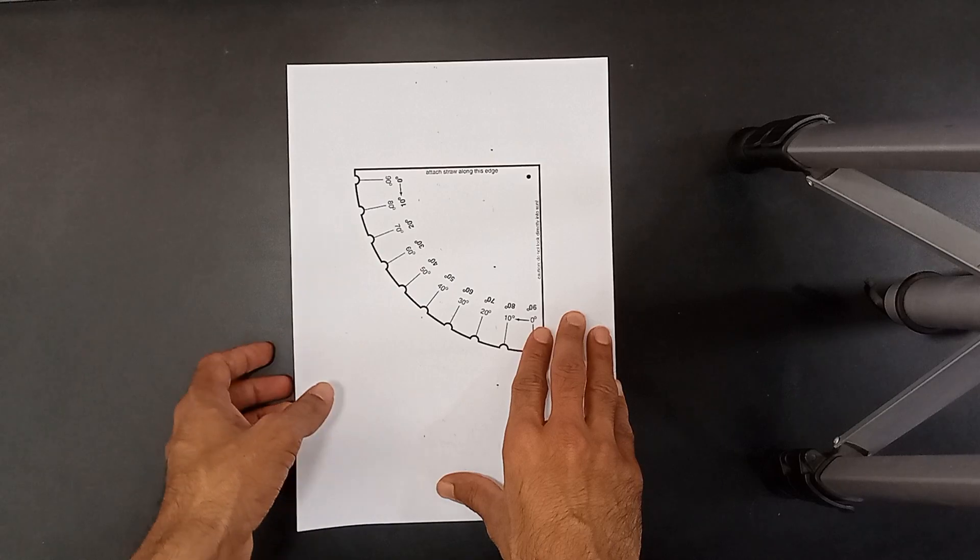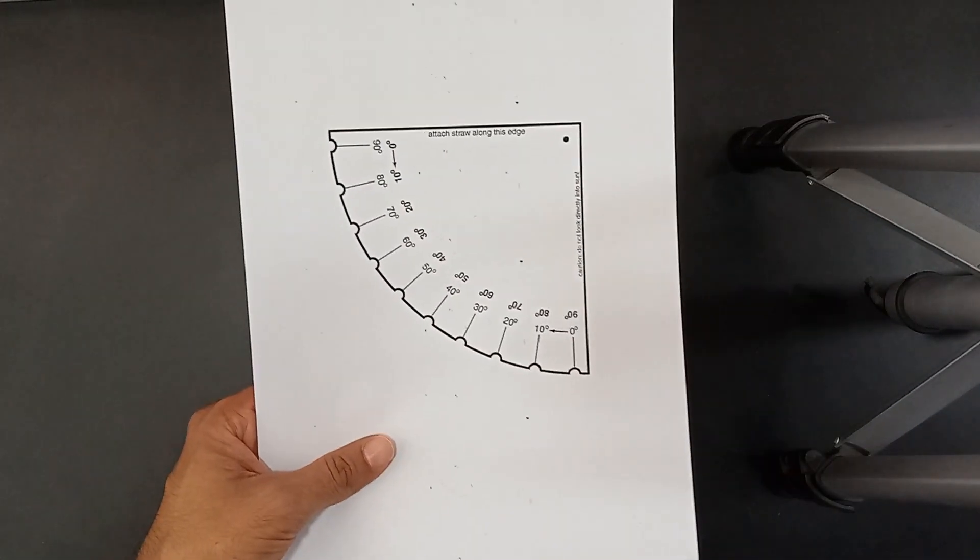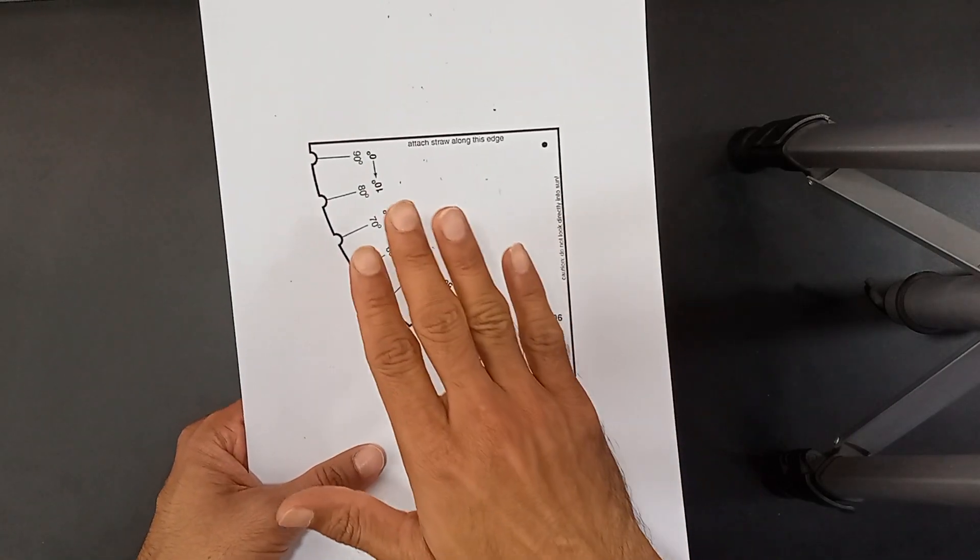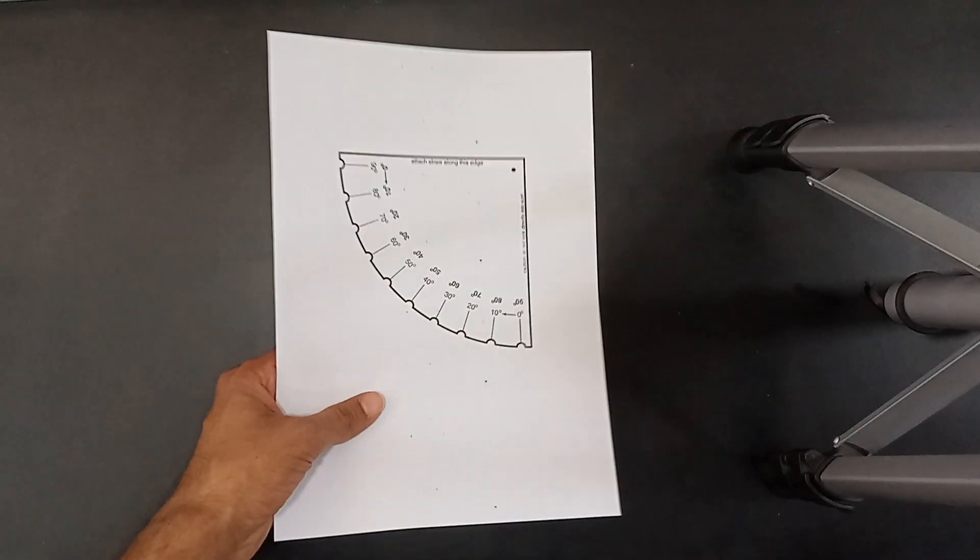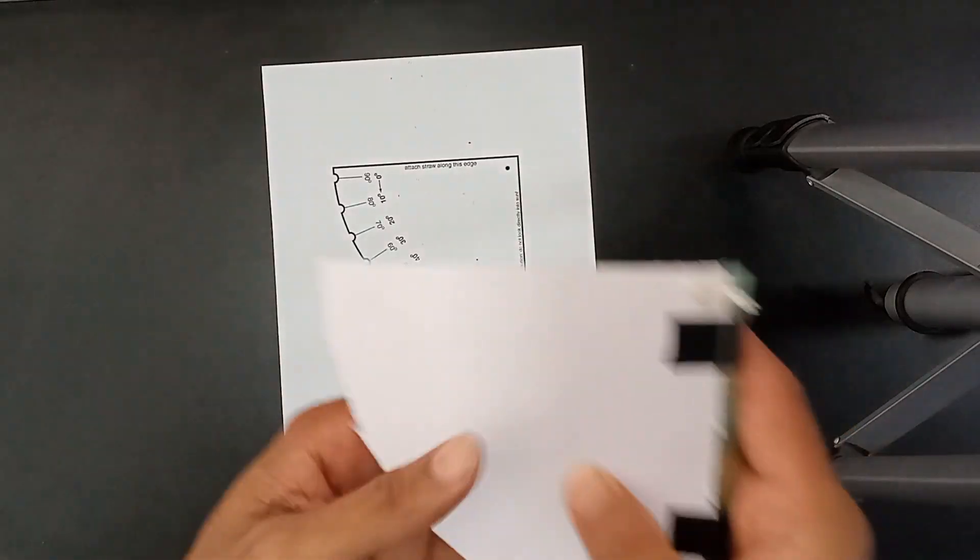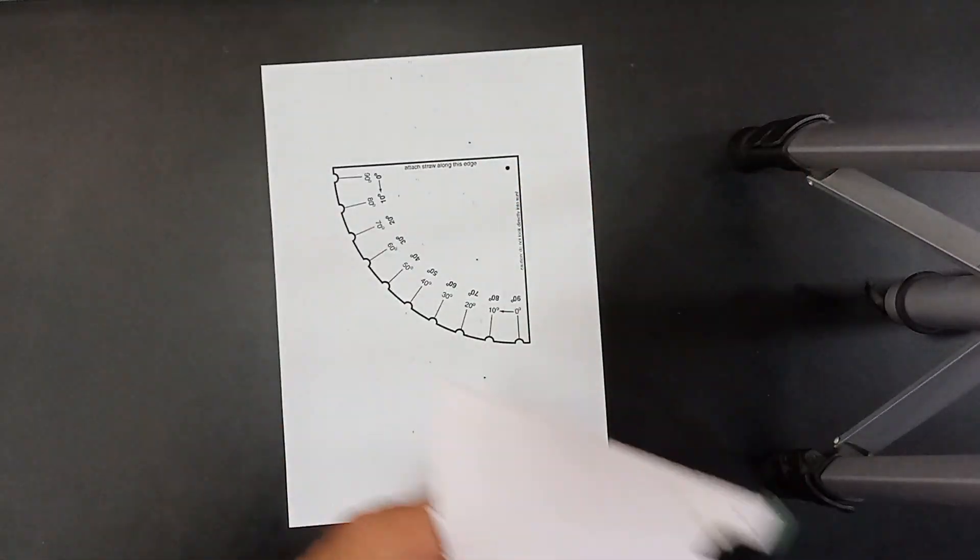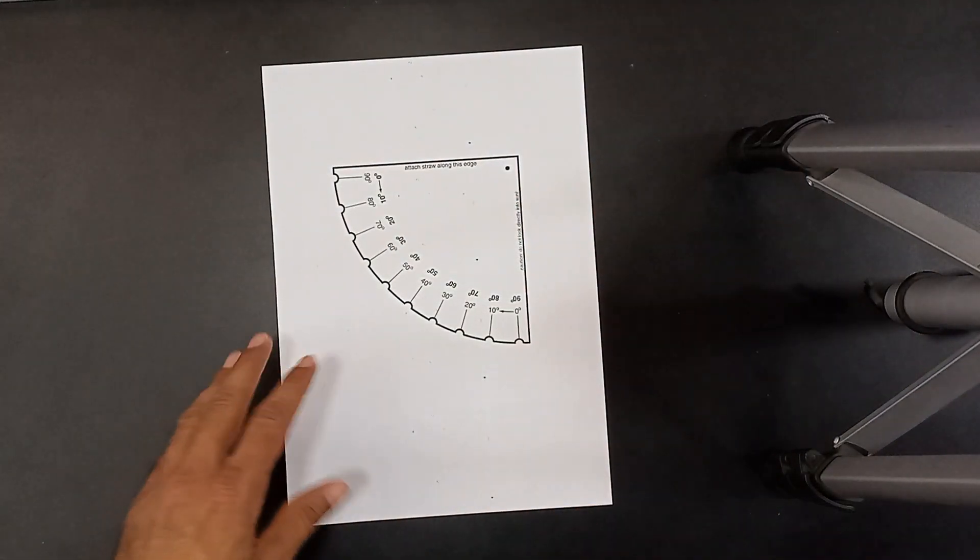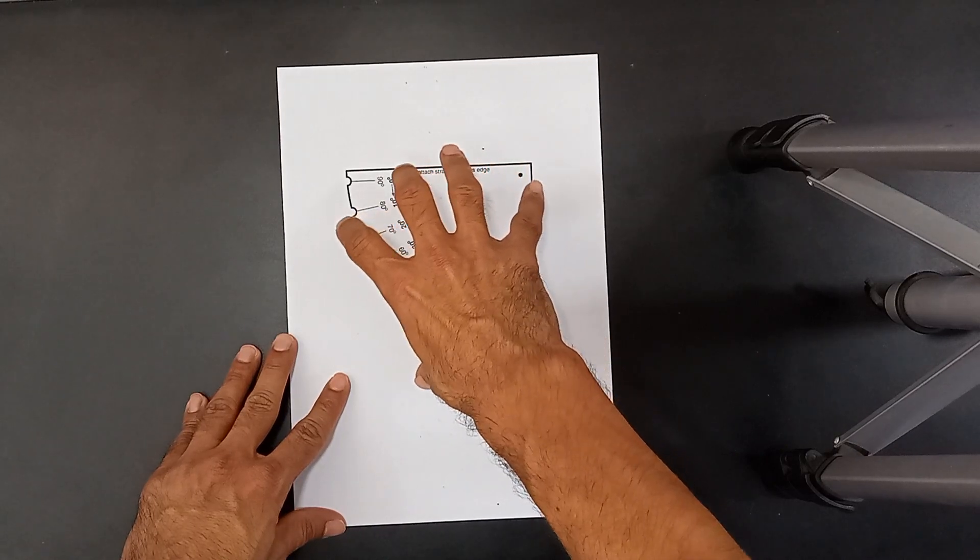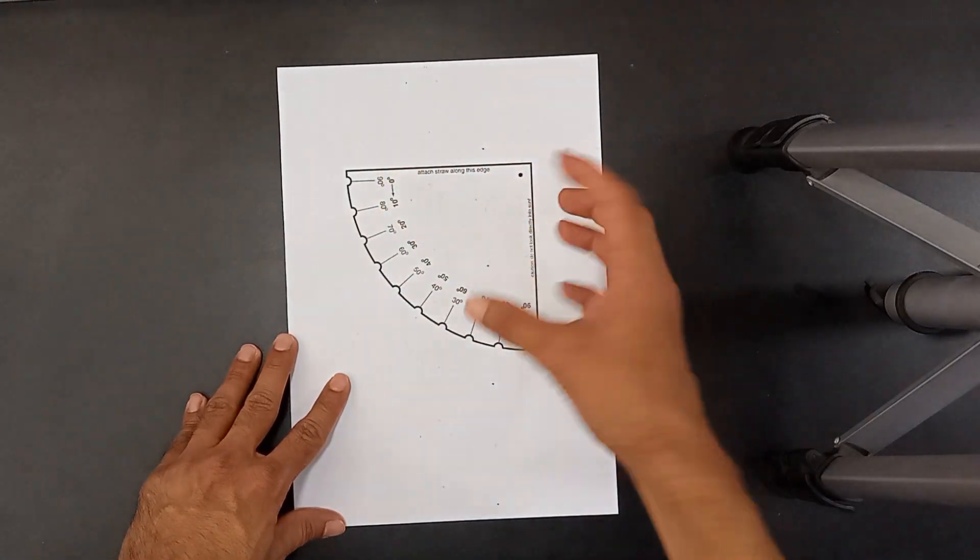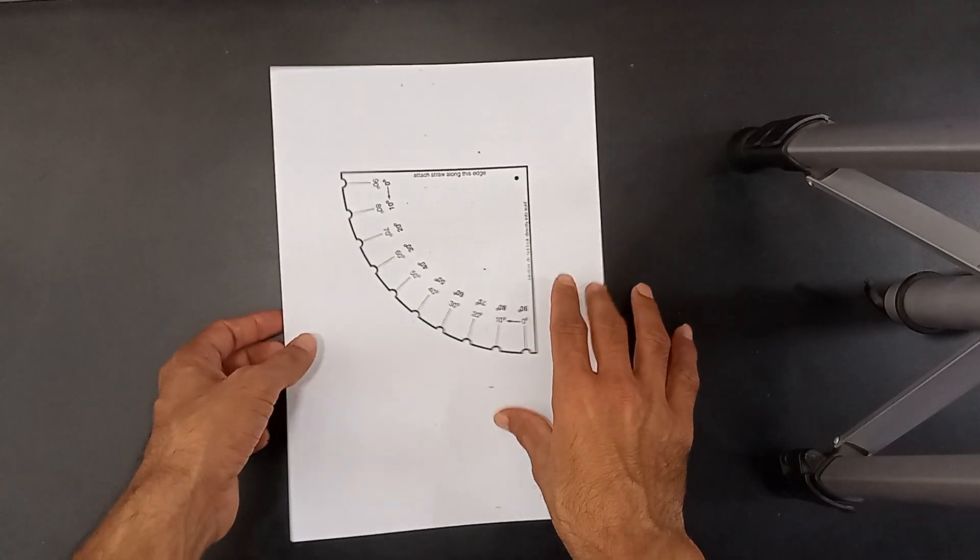What you have to do is take this printout, paste this printout on a very hard surface such as this, and cut it out from that hard surface.